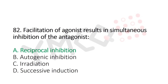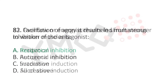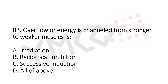Question 83: Overflow of energy is channeled from stronger to weaker muscle — option A: irradiation, option B: reciprocal inhibition, option C: successive induction, option D: all of the above. The answer is option A: irradiation.